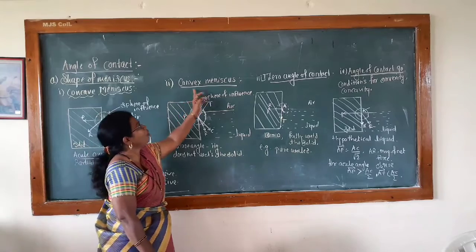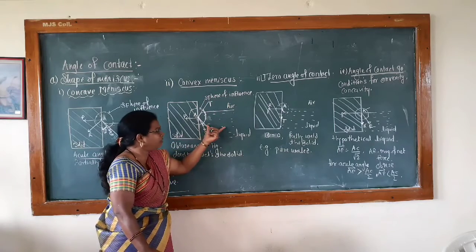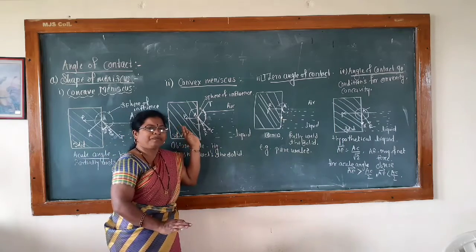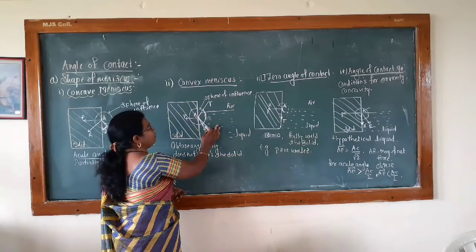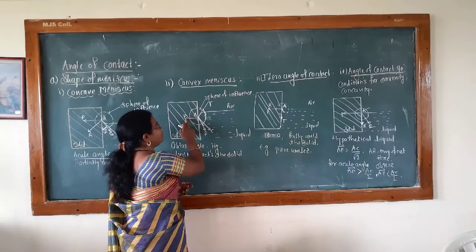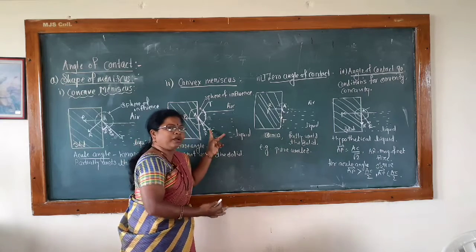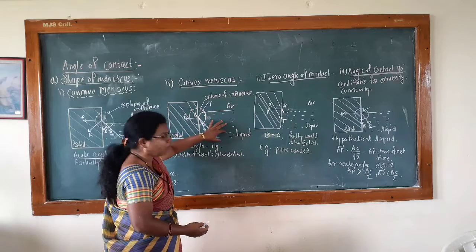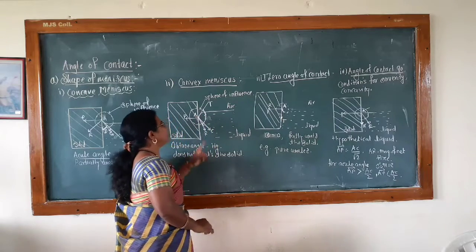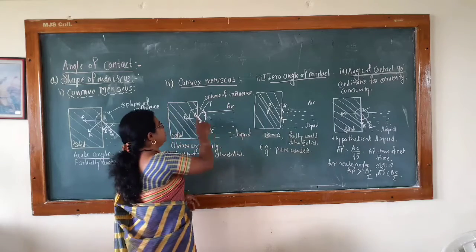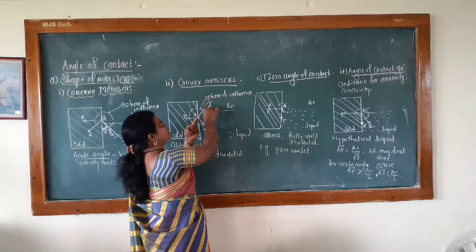Similarly, there is a convex meniscus. Where does a convex meniscus occur? It occurs in cases where the liquid does not wet the solid. An example is mercury (Hg). In such cases, when mercury is in contact with solid, this AP bar is the adhesive force and this AC bar is the cohesive force. This cohesive force is much more than the adhesive force AP bar. That means in mercury, when it is in contact with glass or solid, the cohesive force is much more. Therefore, the resultant AR bar lies towards the cohesive force side, and perpendicular to this is the tangent.